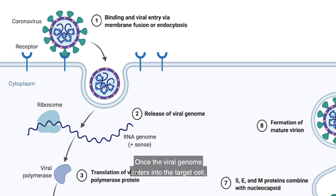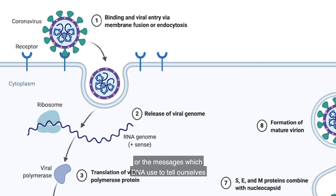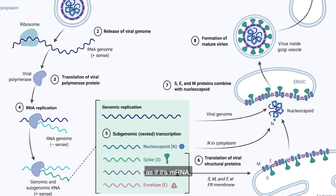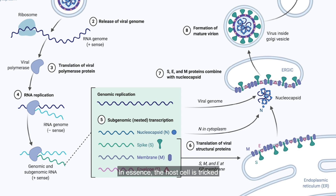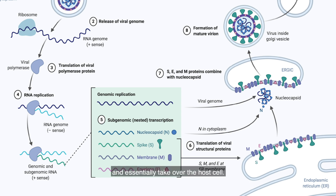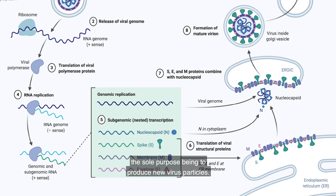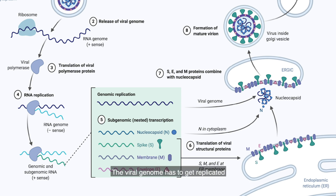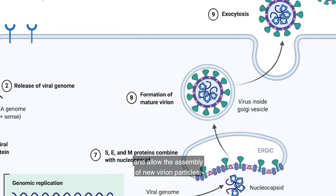Once the viral genome enters into the target cell, it can initiate an infection. Because the viral genome is a positive-sense RNA strand, to the host cell this looks like messenger RNA — the messages which DNA uses to tell our cells how to make protein. So the host cell actually uses this viral RNA as if it's mRNA, and uses it to make viral proteins. In essence, the host cell is tricked into making viral proteins to help this foreign invader. These viral proteins then essentially take over the host cell, set up viral factories within it — the sole purpose being to produce new virus particles. The viral genome gets replicated, new viral proteins assemble, and new virion particles are made, which can then leave this infected cell and go in search of new target cells to infect.